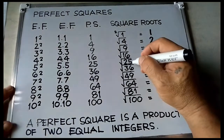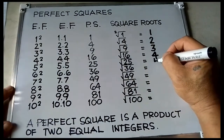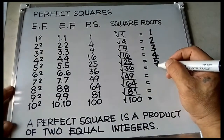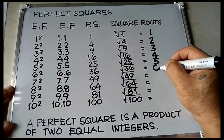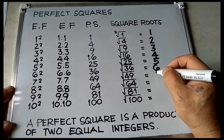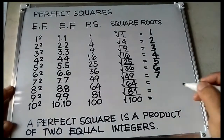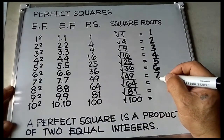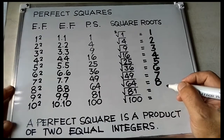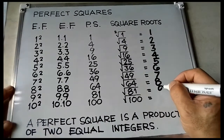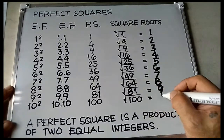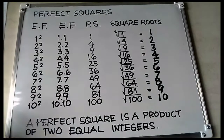The square root of 25 is 5, square root of 36 is 6, square root of 49 is 7, square root of 64 is 8, square root of 81 is 9, and the square root of 100 is 10. That's how easy it is — just keep reviewing these.